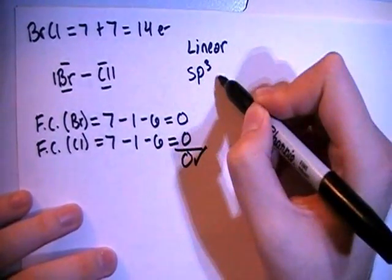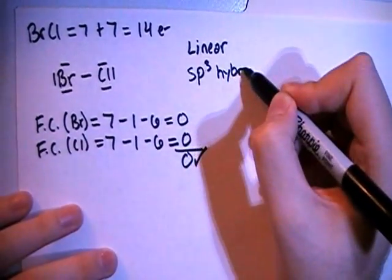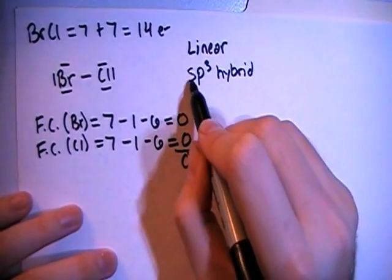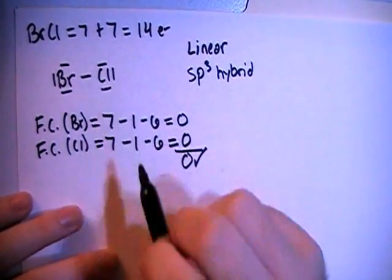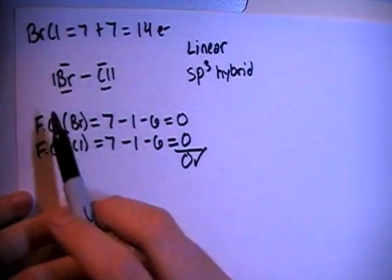So S, P, 3 hybrid. So 1S and 3Ps for a total of 4 hybrid orbitals to match the 4 electron groups.